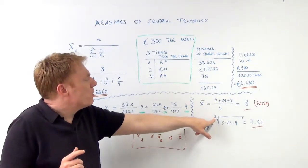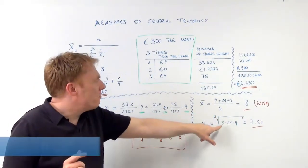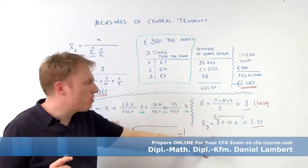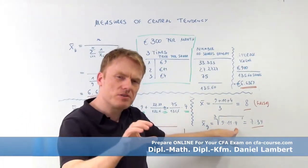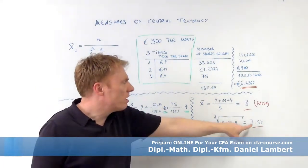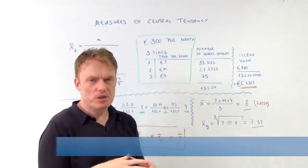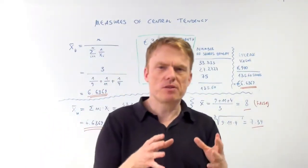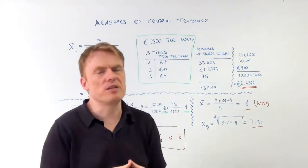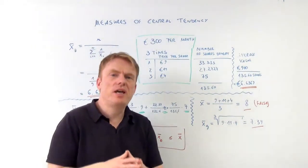The geometric mean, which means the third root of the values 9, 11 and 4, put into this root, gives us 7.34, 7 euros and 34 euro cents, which also is not a correct answer.